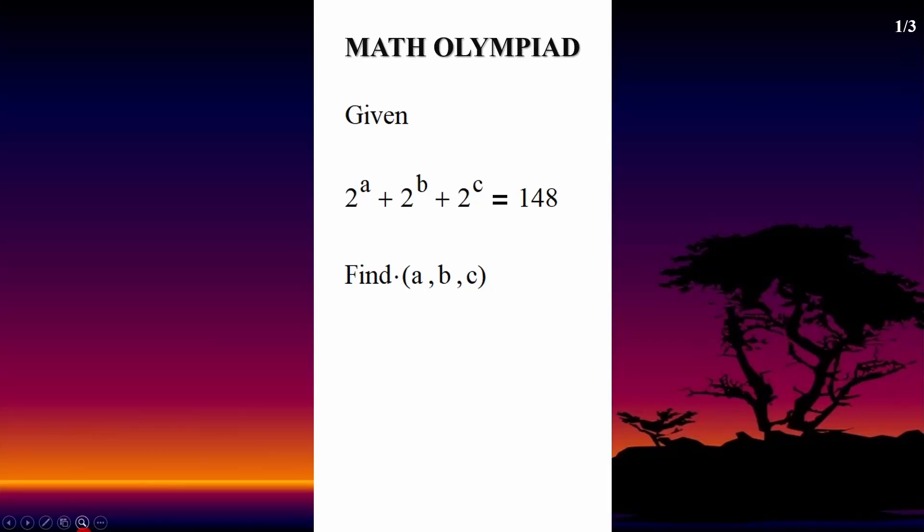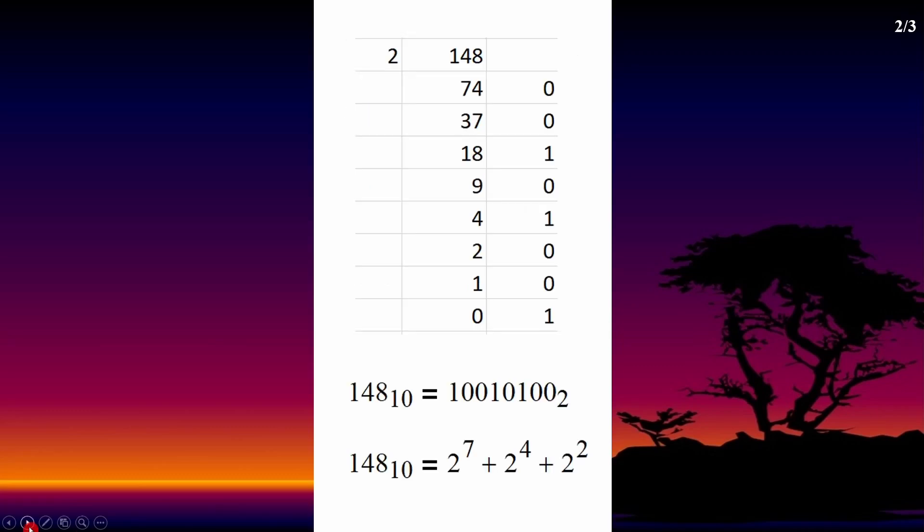Let 2 to the power of a plus 2 to the power of b plus 2 to the power of c equal 148. Find the answers a, b, and c. Start by converting 148 base 10 to binary.